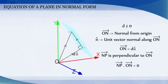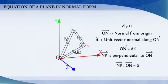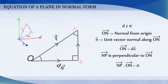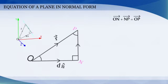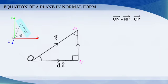Let r be the position vector of the point P. Then, from the triangle ONP, we have vector ON plus vector NP is equal to vector OP. Therefore, NP is equal to r vector minus d into n cap.